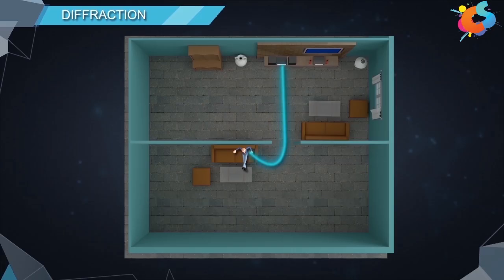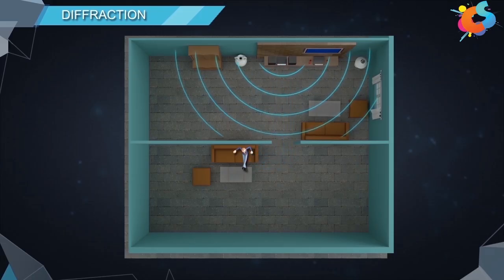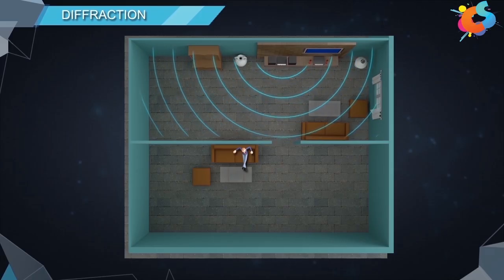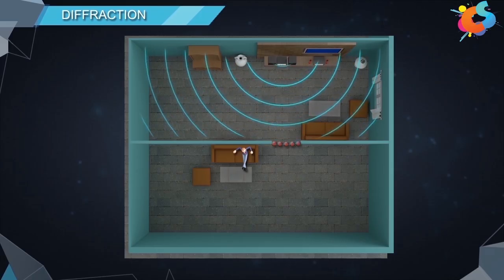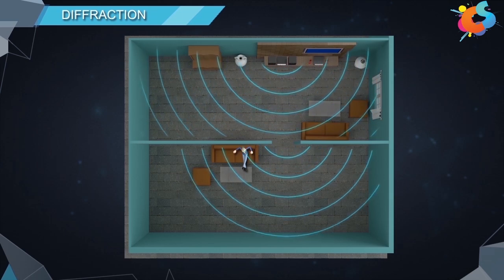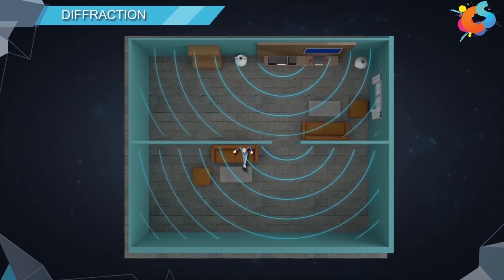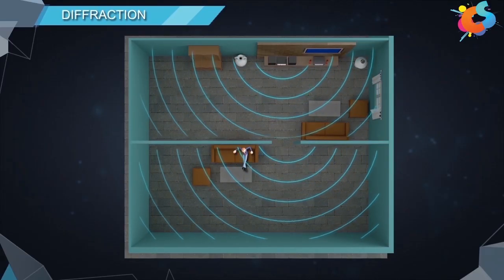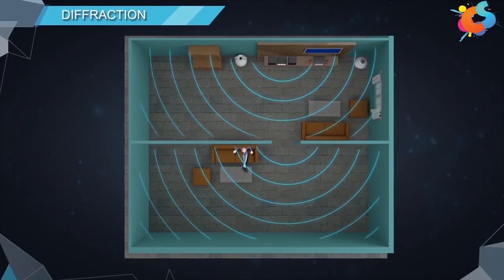The process of diffraction can be explained using Huygens principle. When the waves from the music player reach the opening, according to Huygens principle, every point on the wavefront will act as a source of secondary wavelets. The waves coming from these sources will again propagate in all directions, and some of these waves reach your ears making the music player audible.